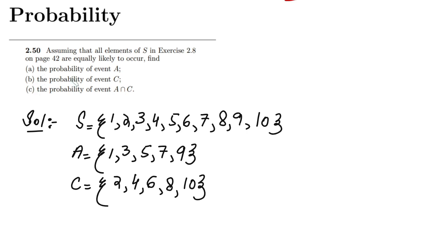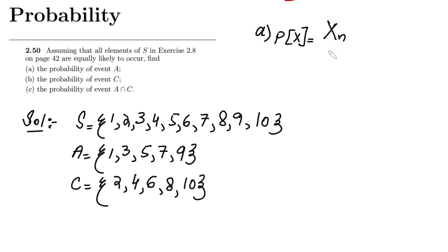Part A is to find the probability of event A. We have event A, the sample space, and set C. In order to find the probability of any event X, we have to find the number of elements in X divided by the total number of elements in the sample space. That is the generic formulation for finding the probability of any event.